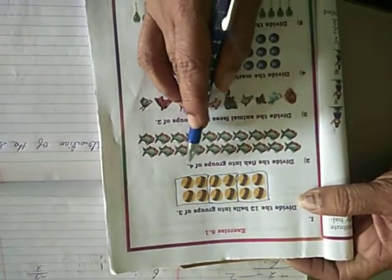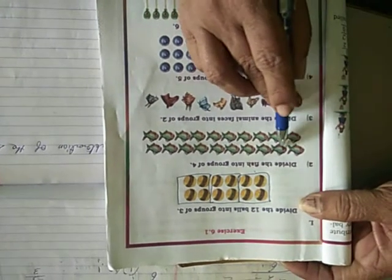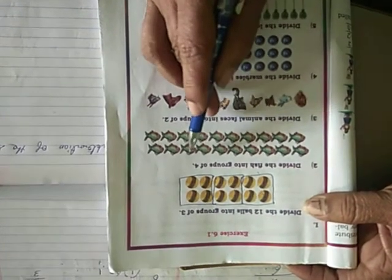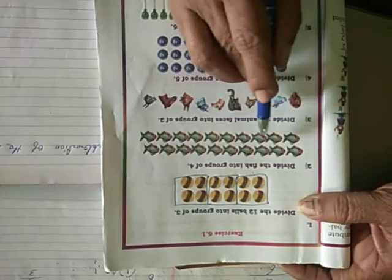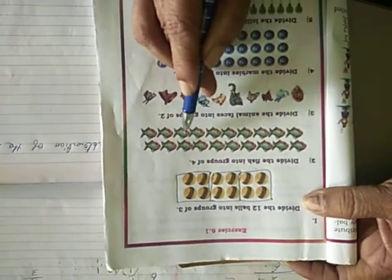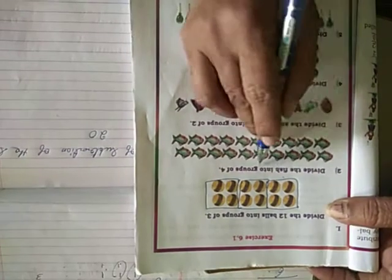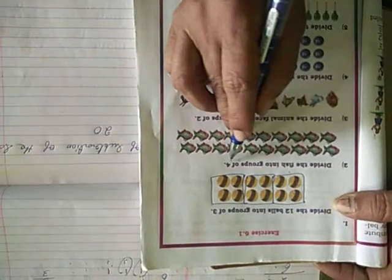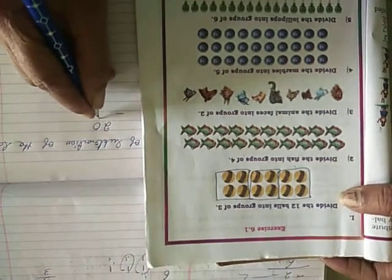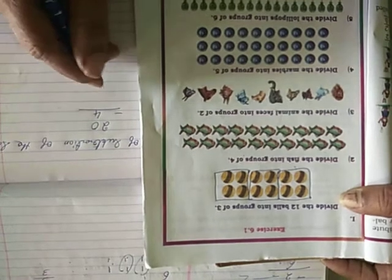Divide the fish into groups of 4. How many fishes do they count? 1, 2, 3, 4, 5, 6, 7, 8, 9, 10, 11, 12, 13, 14, 15, 16, 17, 18, 19, 20. From 20, how many groups you have to make? Fish into groups of 4. Minus 4 from 20.